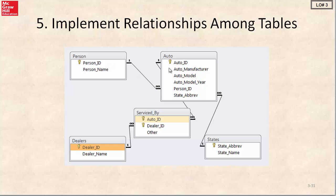Now we have persons linked to automobiles via the person ID foreign key. Automobiles are linked to dealers through the linking table that has a primary key made up of both automobile ID and dealer ID. Automobiles are linked to states via the state abbreviation foreign key.